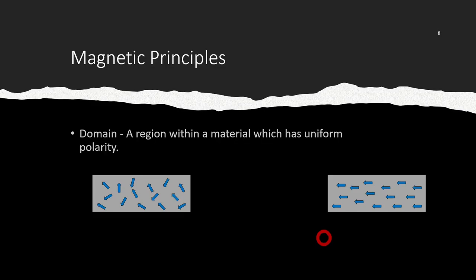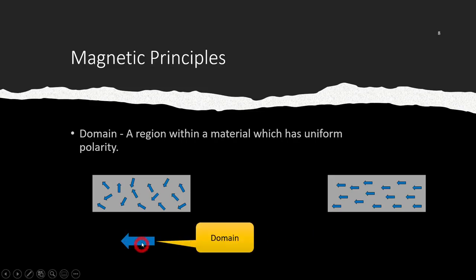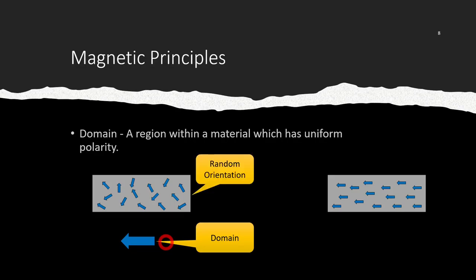The term domain is a region within a material that has some sort of specific polarity. Everything has a charge to it, as we learned in the atomic lesson. A domain is a collection of those atoms in that material that make up a specific region, and that domain has a general north and south to it. If you collect a certain amount of atoms, you're going to get a distinguishable north and south pole.